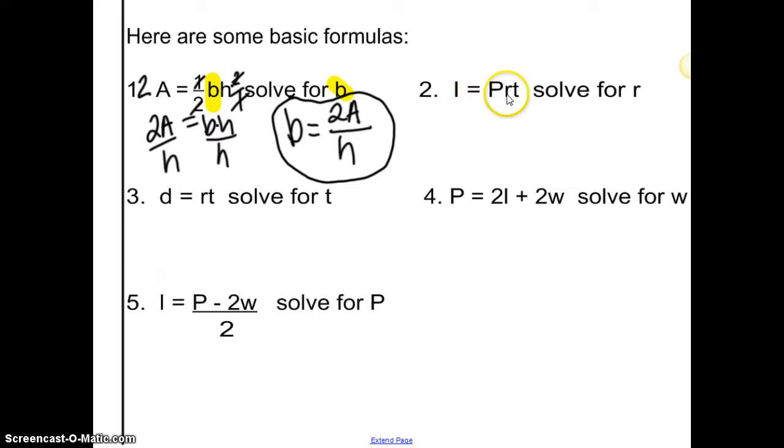Next one. I interest equals principle times rate times time. They want to solve for r. That's right here. I'm going to highlight it. What I then have to undo are the p and the t. And what are those doing to the r? Right. They're multiplying. How do you undo multiply? You divide. Can you divide both of them at the same time? Yes, you can. So, process is that I'm dividing by p over t. Therefore, my r equals the interest divided by the principle and time.